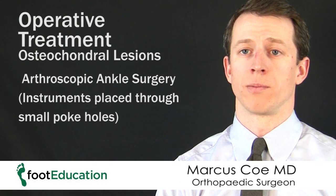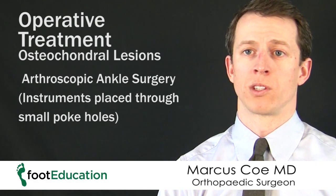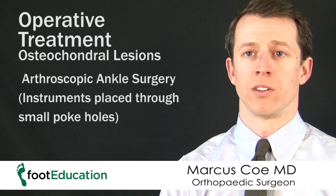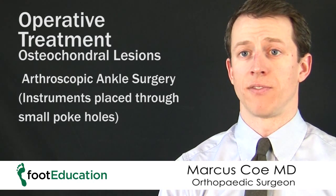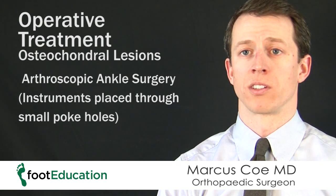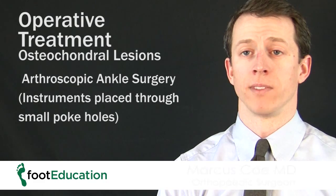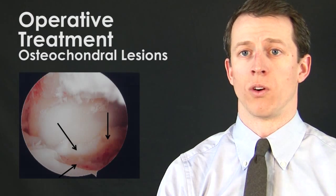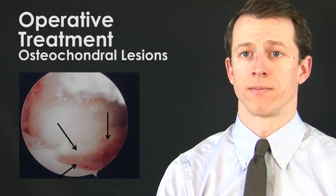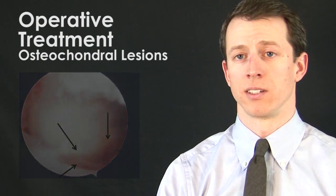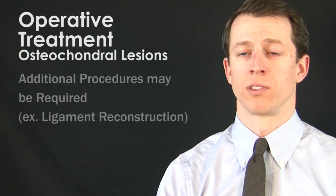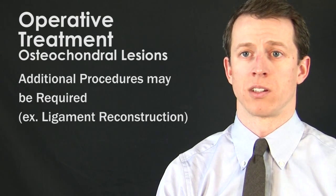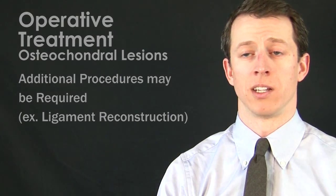Surgery is typically performed through small poke holes, and a camera is inserted into the joint. The defect in the bone is scraped free, and it allows scar tissue to form in the defect. Occasionally, additional procedures such as ligament reconstructions are needed as well.